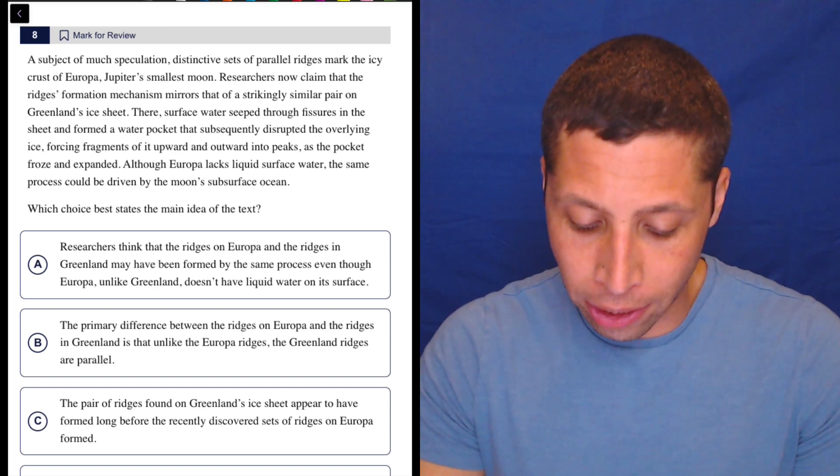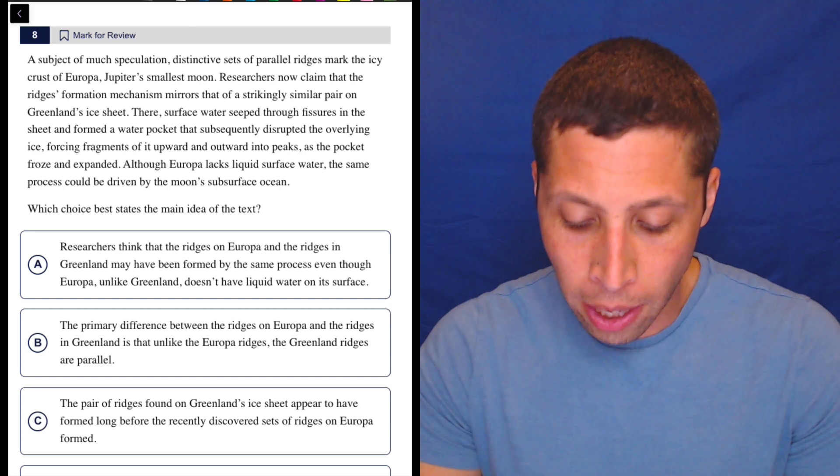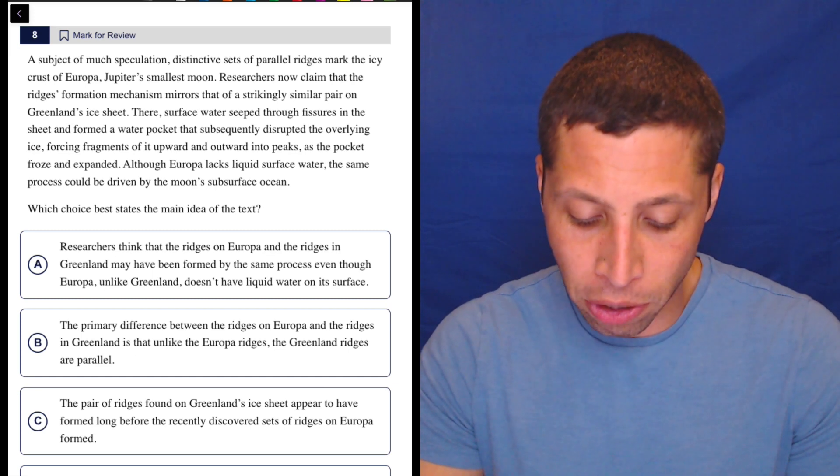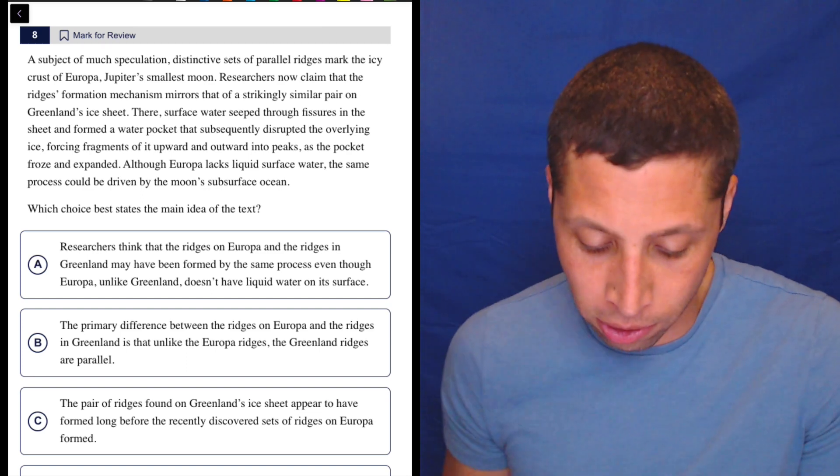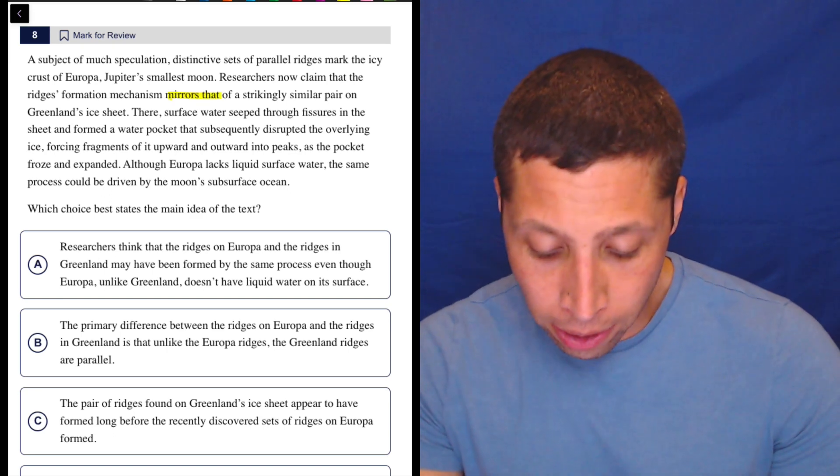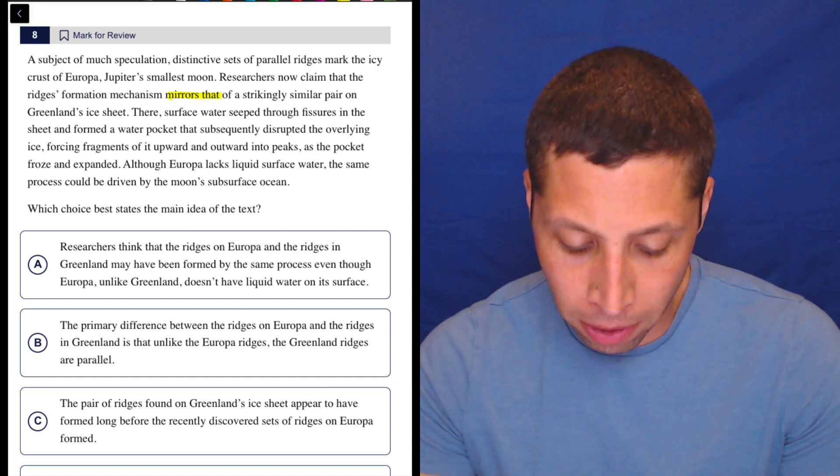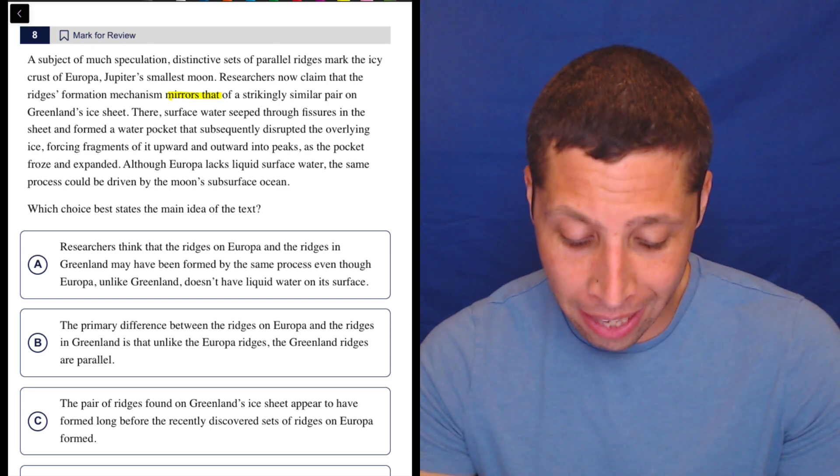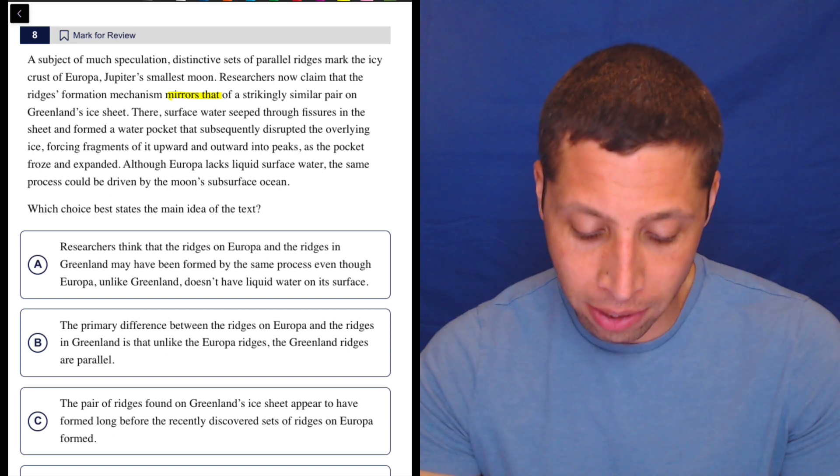A subject of much speculation, distinctive sets of parallel ridges mark the icy crust of Europa, Jupiter's smallest moon. Researchers now claim that the ridges formation mechanism mirrors that of a strikingly similar pair on Greenland's ice sheet. So the moon mirrors Greenland. Okay. There, surface water seeped through fissures in the sheet and formed a water pocket that subsequently disrupted the overlying ice, forcing fragments of it upward and outward into peaks as the pocket froze and expanded. Although Europa lacks liquid surface water, the same process could be driven by the moon's subsurface ocean.